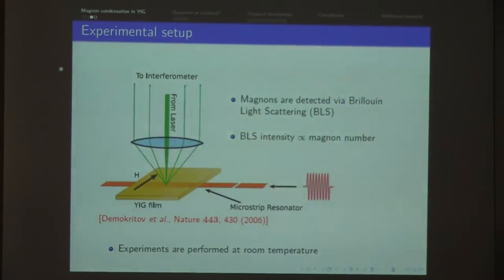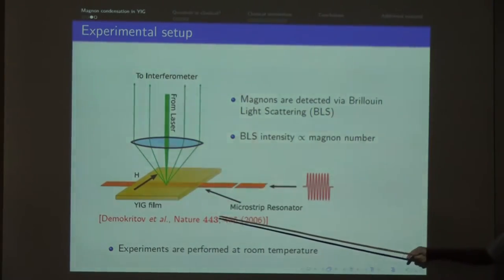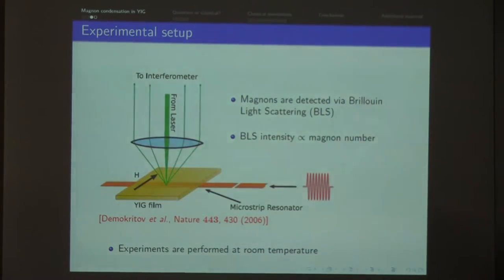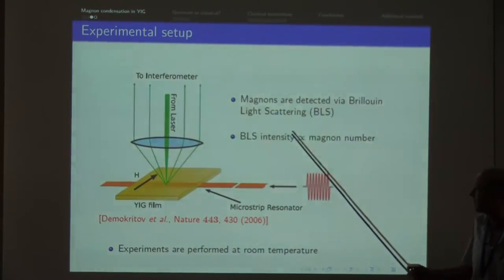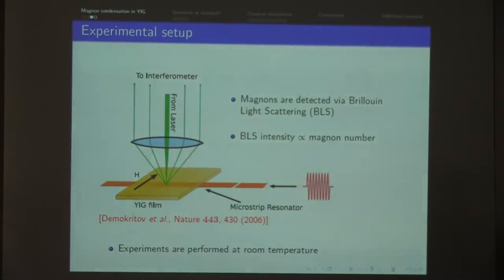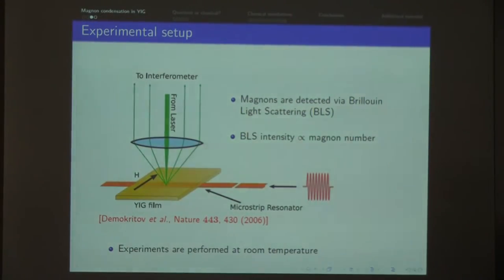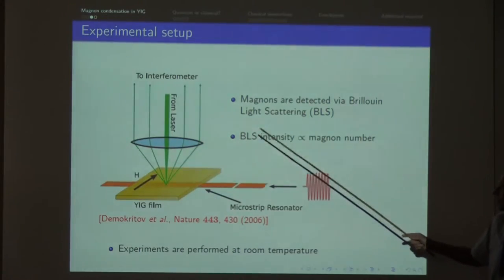This briefly connects with Burkhard's and Demokritov's experiments. At that time Sergei Demokritov was still in Kaiserslautern, so they did this experiment together. You couple microwaves into a YIG film and use Brillouin light scattering, which directly measures the magnon number as a function of time and wave vector. If you're interested in non-equilibrium physics, you get the non-equilibrium time evolution of the magnon occupation — the basic quantity in a Boltzmann equation — and can directly compare theory with experiment.